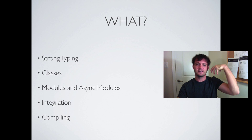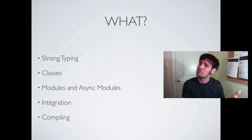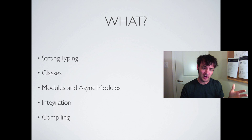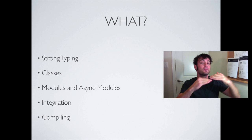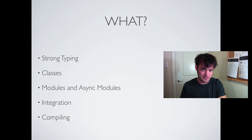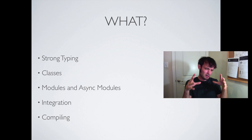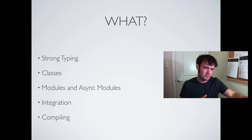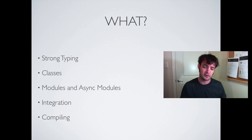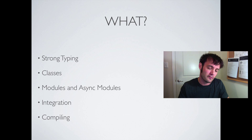Finally: compiling. The whole point of strong typing and modules is having a compiler that says 'hey, you're doing something wrong.' It's a step above JSHinting and JSLinting. The compiler lets us know we're doing things right, optimizing certain coding patterns, and generating the type of JavaScript we want — a really good transpiler.